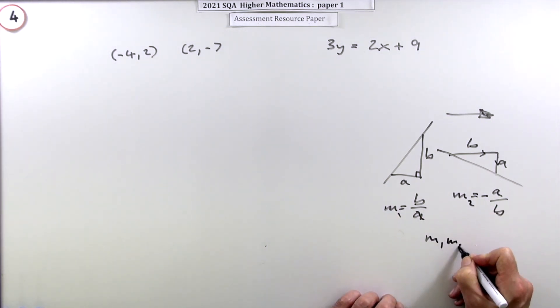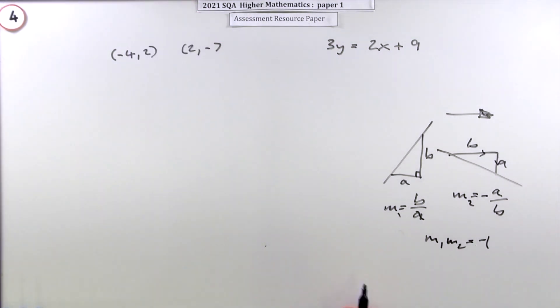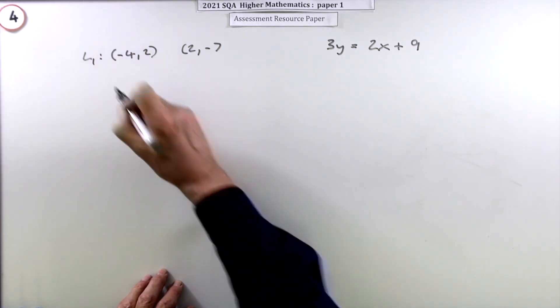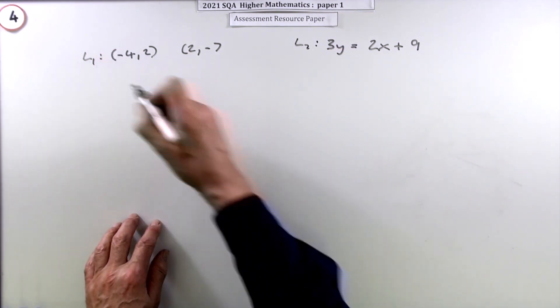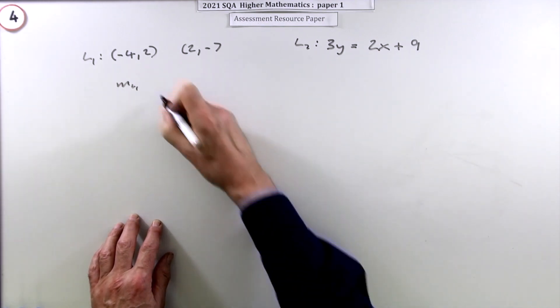M1 times M2 comes to negative one. So that's what you have to show: the gradient of this times the gradient of that comes to negative one. I'll call that line one and that line two, so I can use those as suffixes to distinguish between the two gradients. So the gradient of line one.